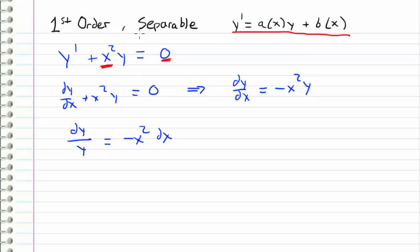And since we were able to separate these variables like that, that's why we refer to this type of a differential equation as separable. Now for a differential equation of this form, it's not always guaranteed that it is going to be separable — however, that's a topic for the next video. So let's go ahead and proceed with this example.